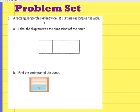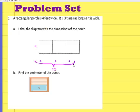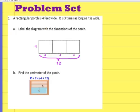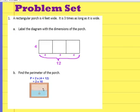A rectangular porch is 4 feet wide and 3 times as long as it is wide. Label the diagram with the dimensions of the porch. We know it's 4 feet wide, and since it's 3 times as long, this portion is 4, and this portion and this portion — the length is 4, 4, and 4, so the length is 12. Finding the perimeter: perimeter equals 2 times 4 plus 12. 12 plus 4 is 16, so 2 times 16 is 32 feet. The perimeter is 32 feet.